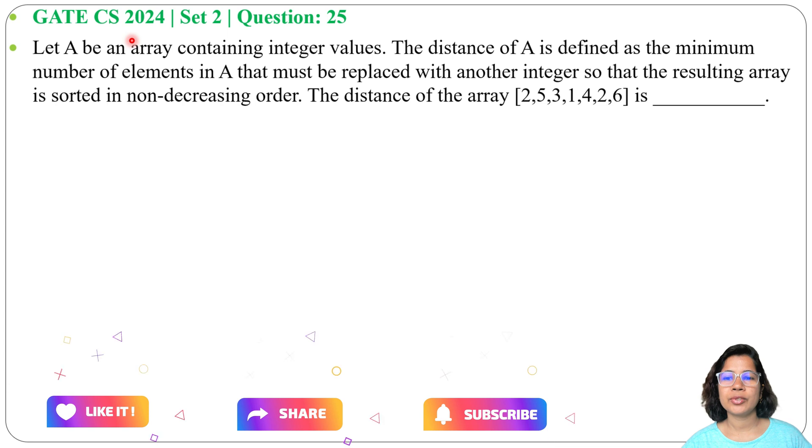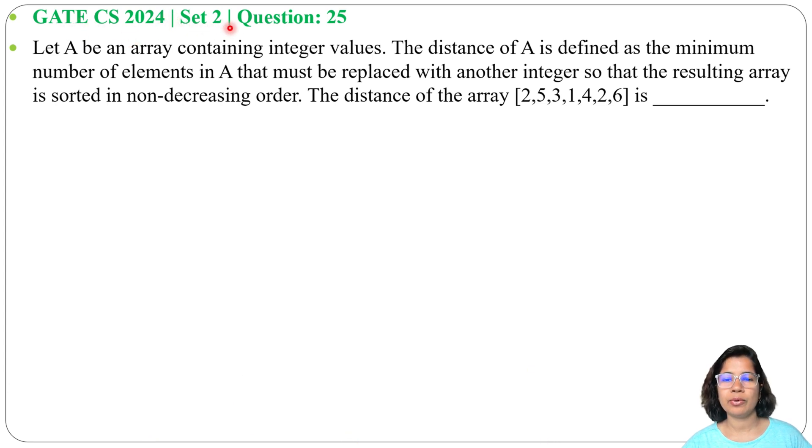Let's solve one previous question on sorting. This question was asked in GATE CS 2024 Set 2, Question 25. Let A be an array containing integer values. The distance of A is defined as the minimum number of elements in A that must be replaced with another integer so that the resulting array is sorted in non-decreasing order.